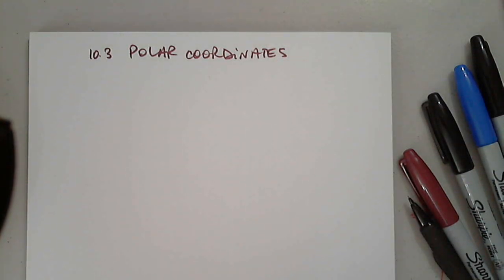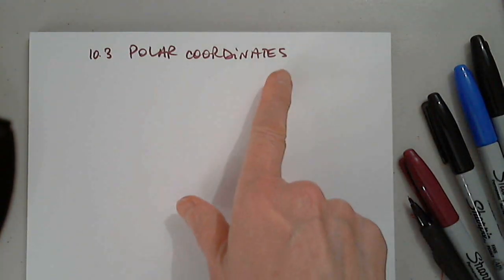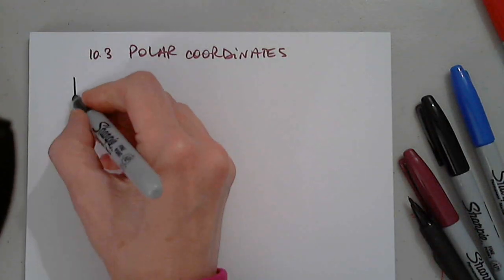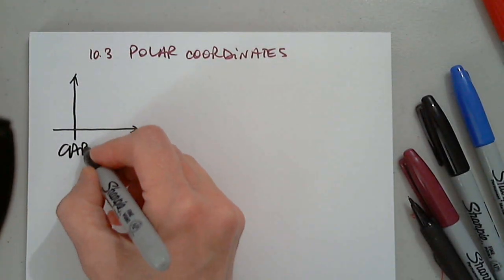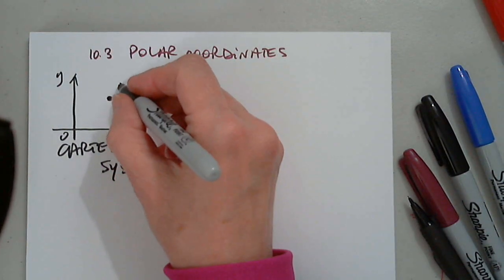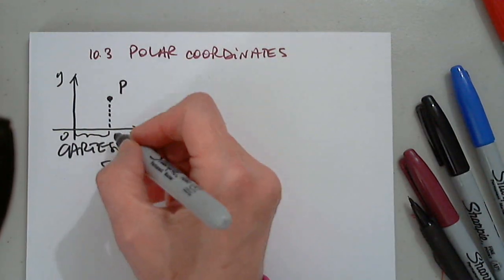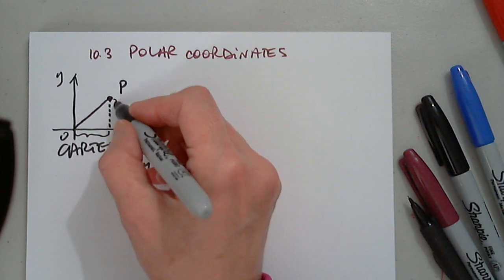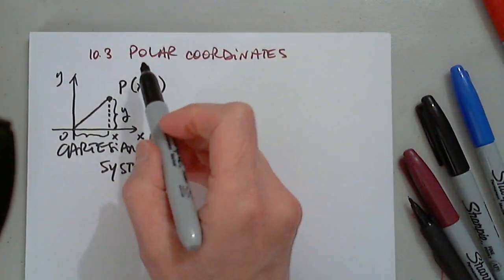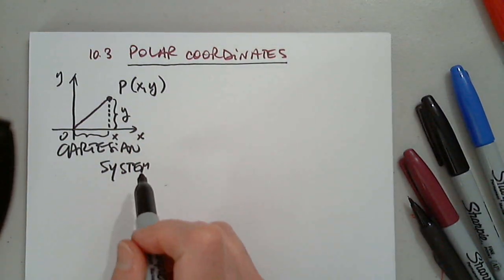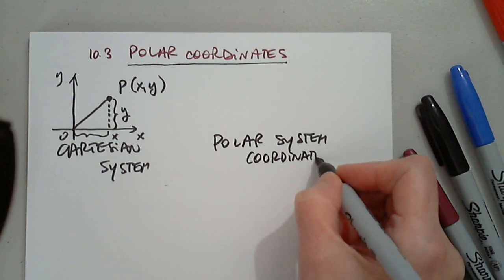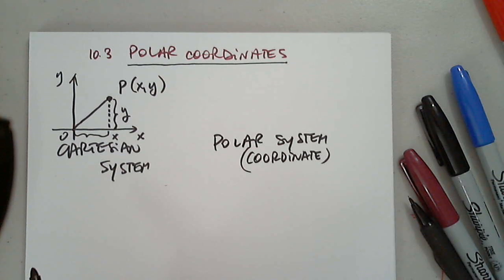Hello again. The last two sections of chapter 10 that we are going to study deal with polar coordinates and calculus in polar coordinates. We know the Cartesian system, in which every point P has an x coordinate and a y coordinate. We also have something called the polar coordinate system.